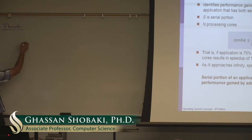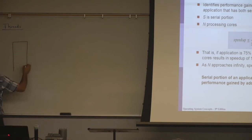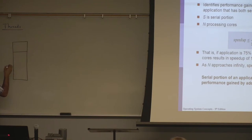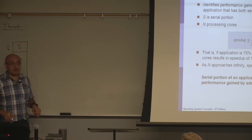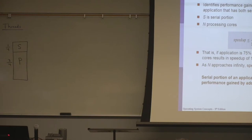Consider this program. One quarter of this program is not parallelizable because of dependencies — I'll call it S for sequential. So one quarter of this program is sequential; it cannot be parallelized because it has lots of dependencies. The remaining three quarters are parallelizable, because there is enough independent work that will allow me to divide this into threads.